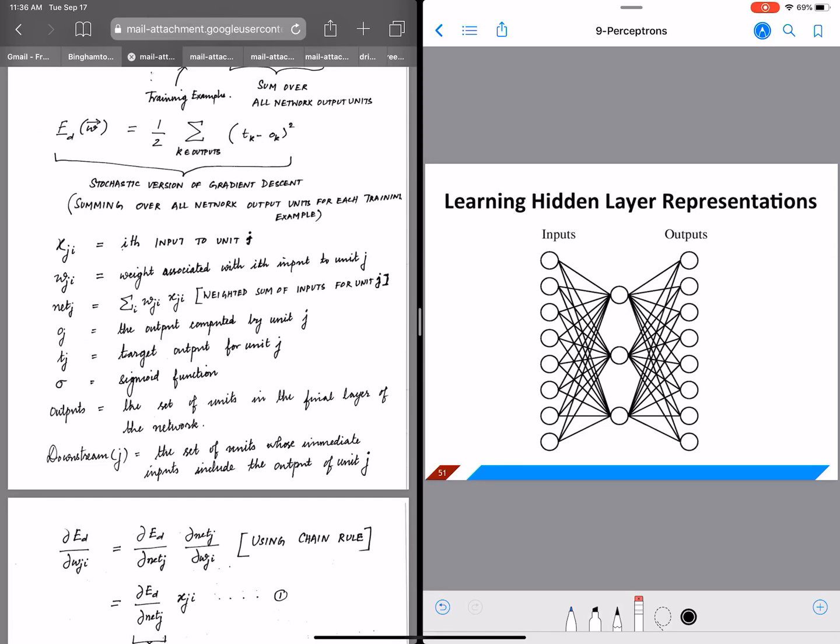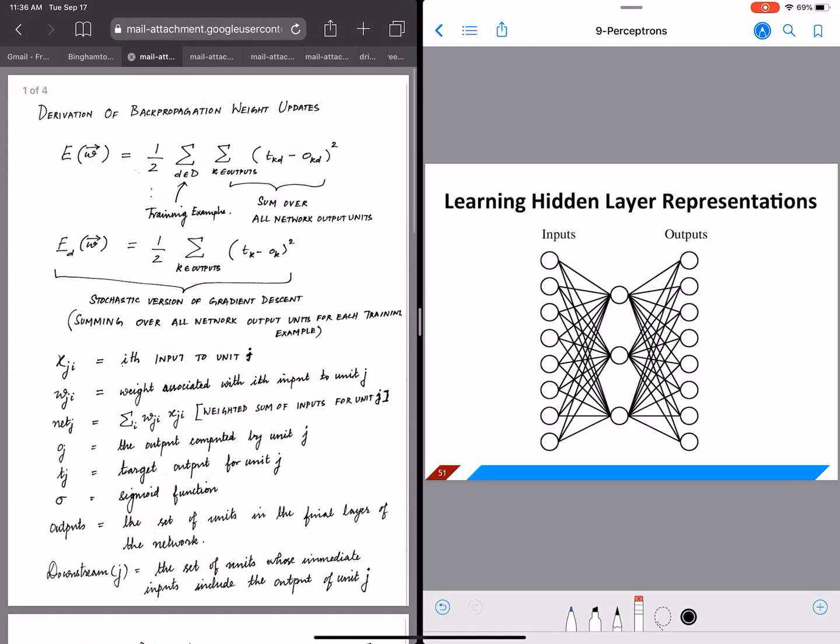In the last video we introduced the setting for backpropagation. In this video we are going to start our derivation of the backpropagation weight updates. Remember the backpropagation algorithm is used when we have a network of input, hidden, and output units similar to what we are seeing on the right.